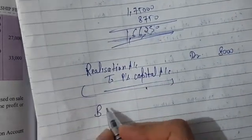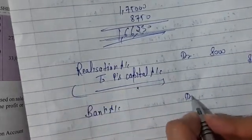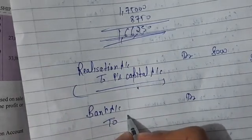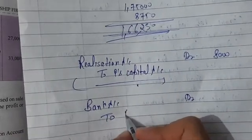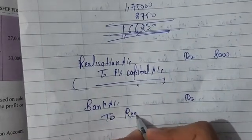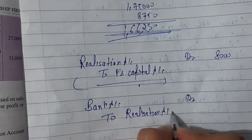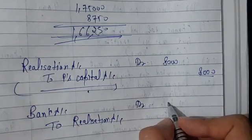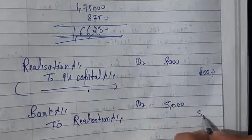Money is coming in, so Bank will increase. When bank increases, we debit it. The journal entry will be: Bank Account Dr. to Realization Account. The posting goes to Realization and Bank accounts.